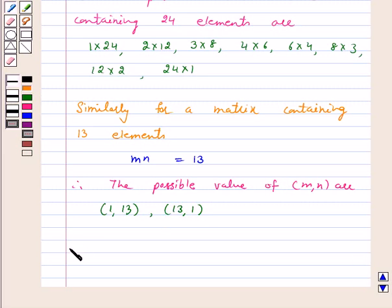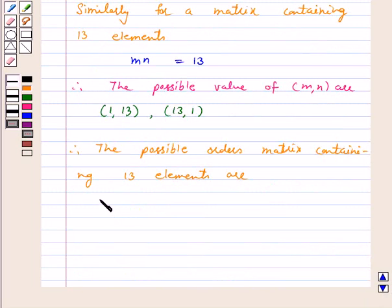Therefore, the possible orders of a matrix containing 13 elements are 1×13 and 13×1.